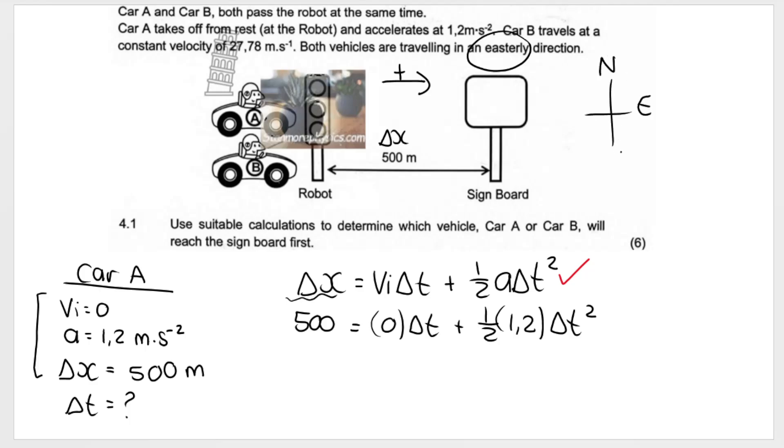Remember, the car is traveling to the right, and we chose to the right, or east, as our positive direction. Remember, it goes N, E, never eat sour worms. And our car is going to the east. Our east is our positive direction. So the 500 is positive. The acceleration is positive.